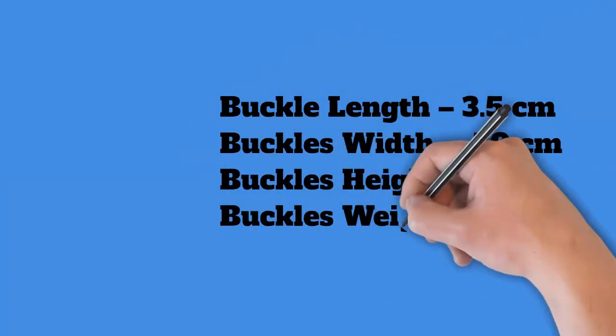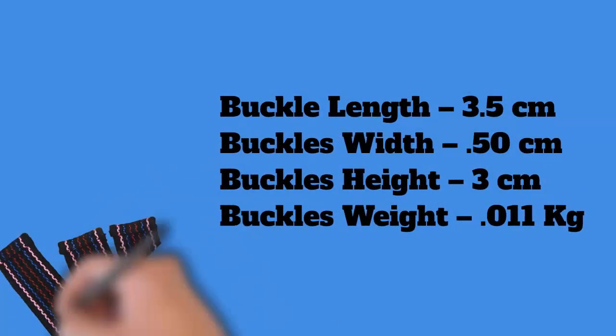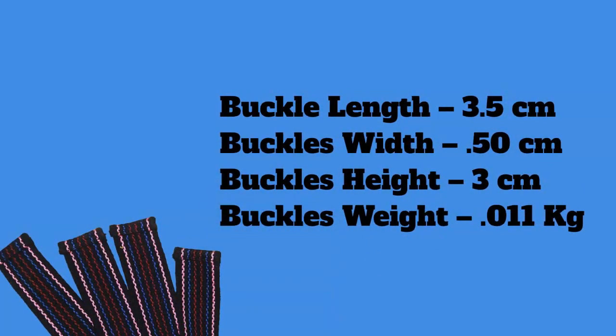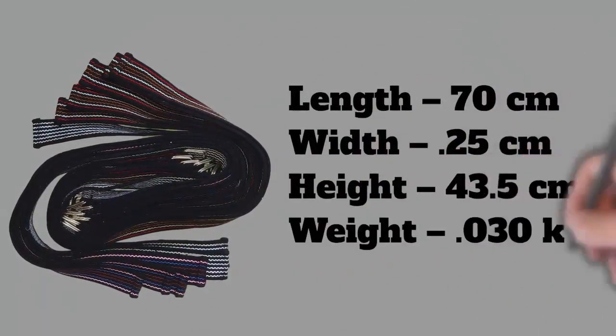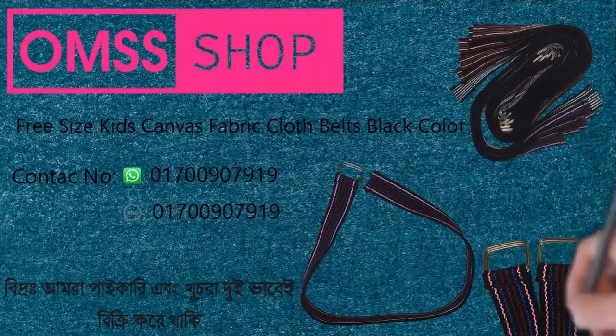Buckle dimensions: length 3.5 centimeters, width 0.50 centimeters, height 3 centimeters, weight 0.11 kilograms. Belt dimensions: length 70 centimeters, width 0.25 centimeters, height 43.5 centimeters, weight 0.30 kilograms.